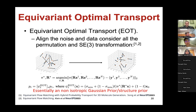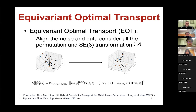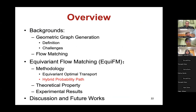Here is the final objective: we sample a pair from the data distribution and the prior distribution, calculate the equivariant optimal transport mapping between these two samples, obtain the interpolations, and then train following the typical flow matching algorithm. This completes the first component, equivariant optimal transport, and now we go to the hybrid probability path.